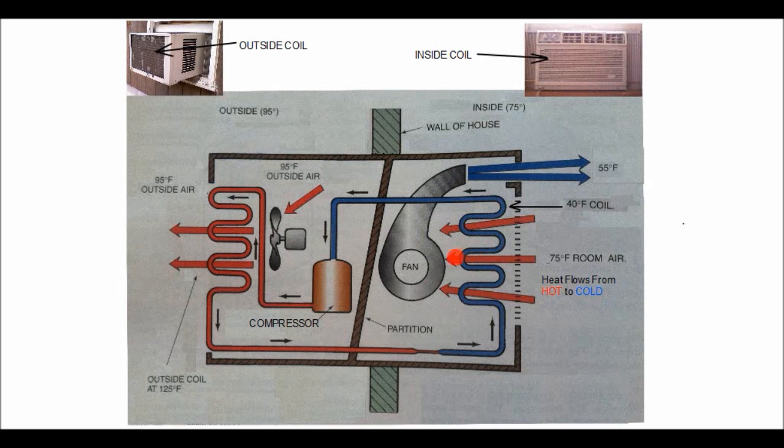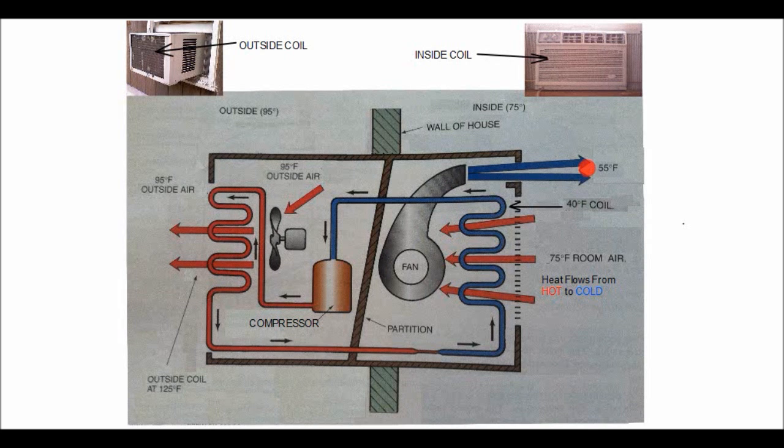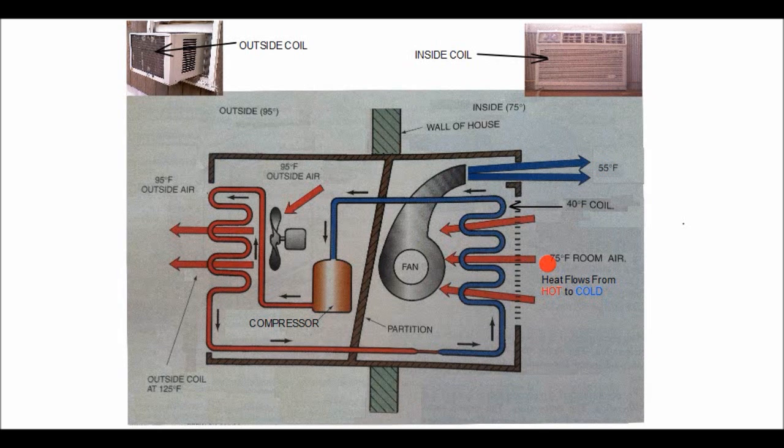And when the air ends up on the other side of the coil, some of the heat has been removed, and that air comes out on the other side of the coil at about 55 degrees. Most of your air conditioners are going to cool the air by about 20 degrees. If you can get 21, 22, it's doing really well. You'll see on the older air conditioners, it's somewhat below that.